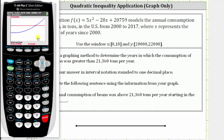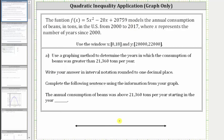We also need to recognize that this model is only good through the year 2017. Therefore, we stop at x equals 18 and do not include 18, because x equals 18 represents the year 2018, beyond the year of the model. So our solution will be the x values from 13.1 to 18, not including the endpoints. Using interval notation with parentheses — not square brackets — the solution is the open interval from 13.1 to 18.